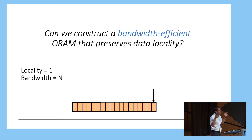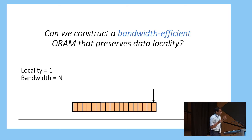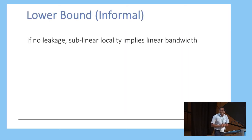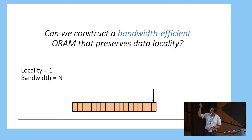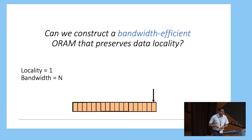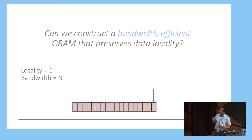If reducing locality was my only goal, then a simple solution would just work: scan the entire memory and you get a locality of 1, which is great. But the problem is that your bandwidth is going to be very high. So I'm trying to reduce both locality and bandwidth together, and intuitively I'm trying to get both of them to be polylogarithmic in N.